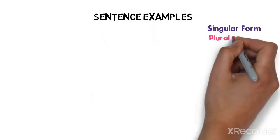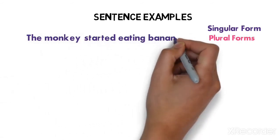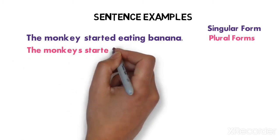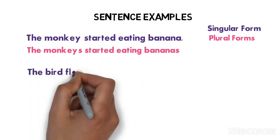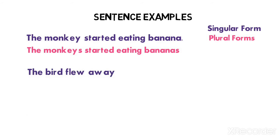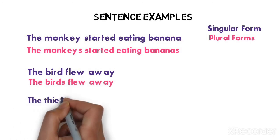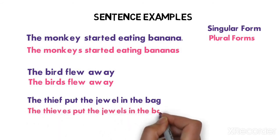Let's see the examples in sentences. Singular forms and plural forms. The monkey started eating banana. Its plural form: the monkeys started eating bananas. The bird flew away. Its plural form: the birds flew away. The thief put the jewel in the bag. Its plural form: the thieves put the jewels in the bag.